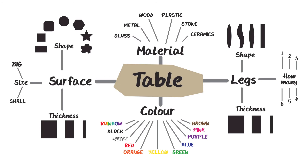Or, if you are tasked with designing an object such as a table, you could ask yourself what are the features of the object you could change. These could include the material, the colour, the shape, and even the number of legs.